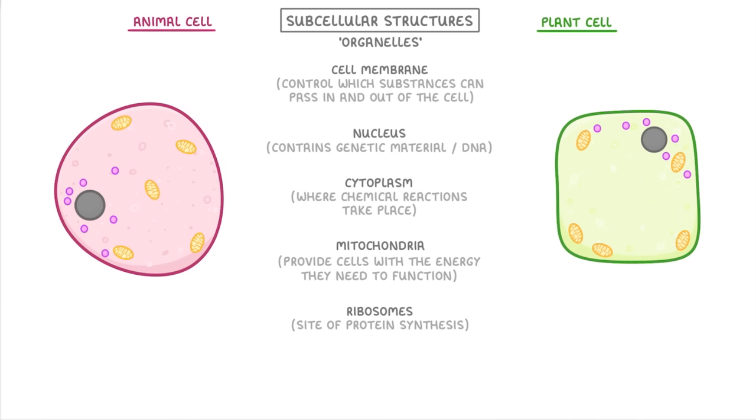Now, all of these subcellular structures that we've just mentioned are common to both animal and plant cells. But importantly, plant cells also have a few extra structures.